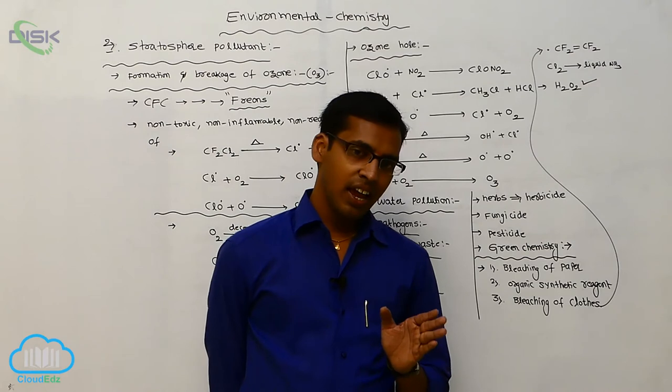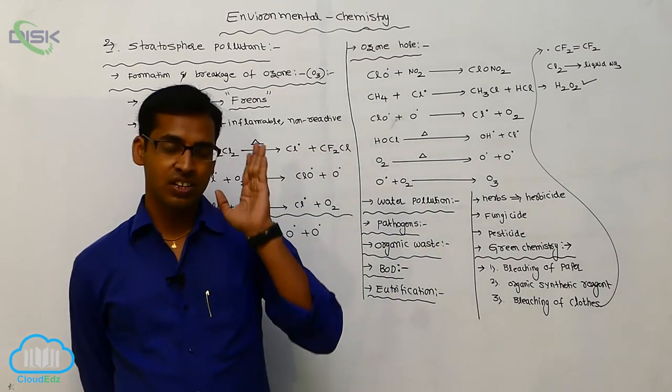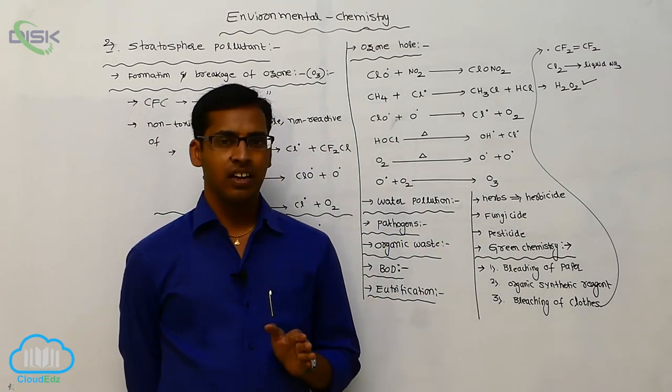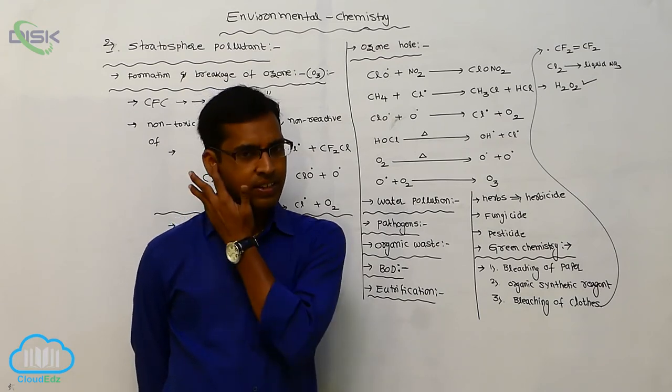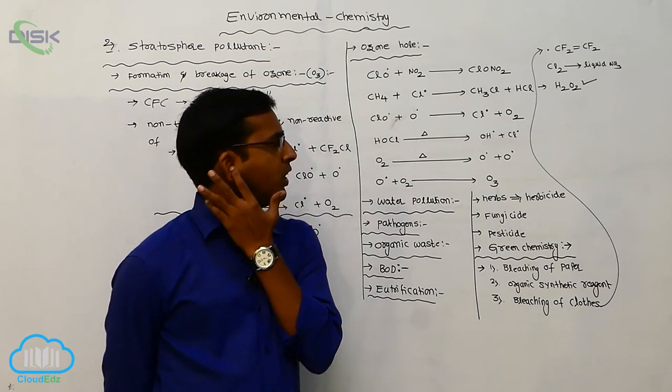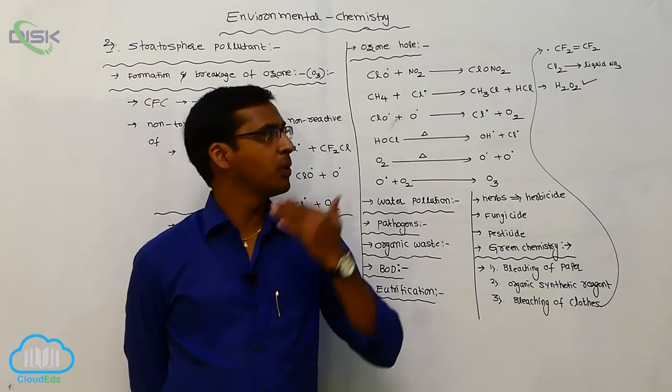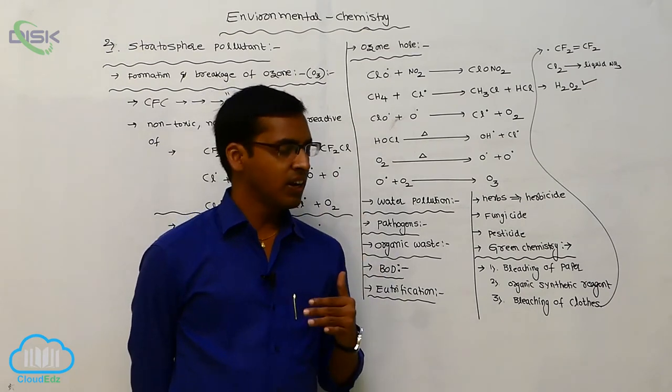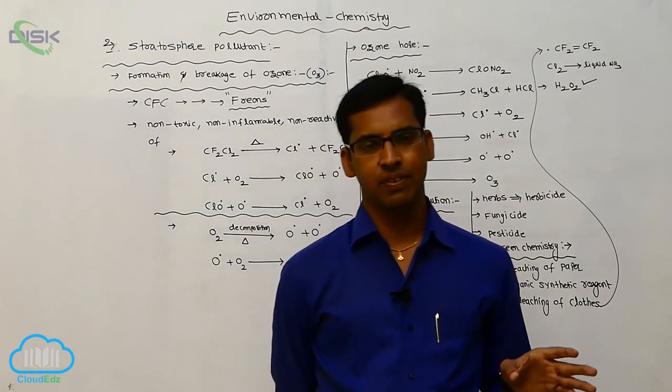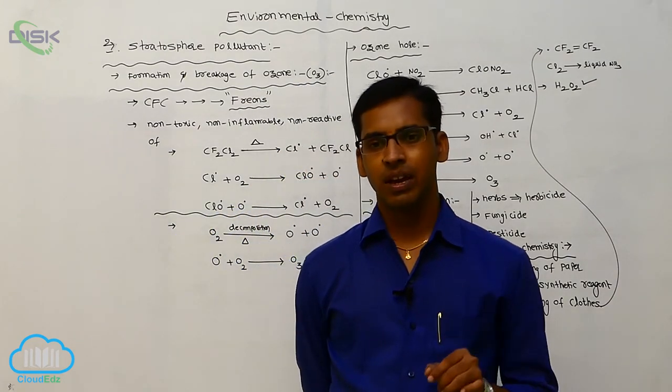Generally, for bleaching of cloth, we use tetrafluoroethylene. It causes more side effects. Chlorine in presence of liquid ammonia causes very less side effects compared to the first one. But nowadays, hydrogen peroxide does not cause any side effects. That is your green chemistry.